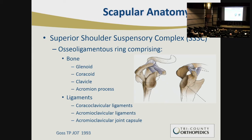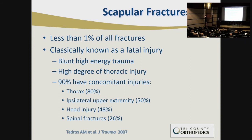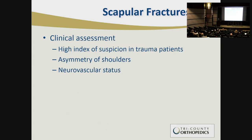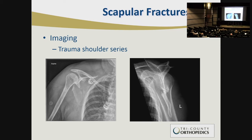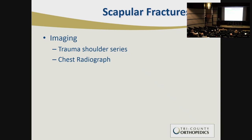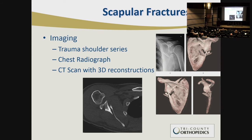With scapula fractures, the key question is: is this ring broken? Scapula fractures are generally less than 1% of all fractures. Historically they've been associated with fatal high-energy trauma, with a high degree of thoracic injury — 90% will have a thorax injury, ipsilateral upper extremity injury, head injury, or spinal fracture. Clinical assessment requires a high index of suspicion in trauma patients. CT scans are now standard of care for evaluating this fracture, particularly for intra-articular involvement and degree of displacement or angulation.